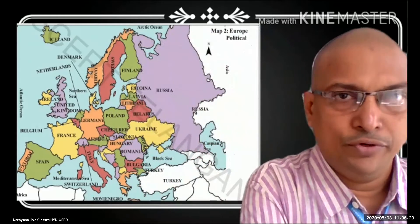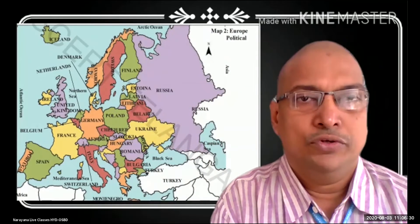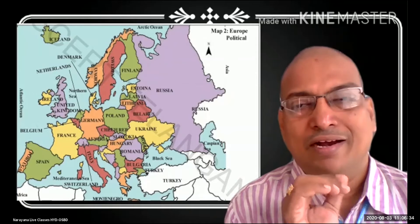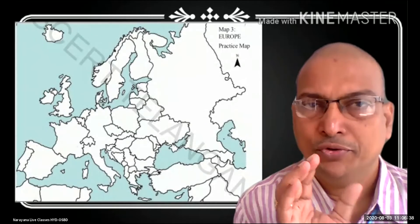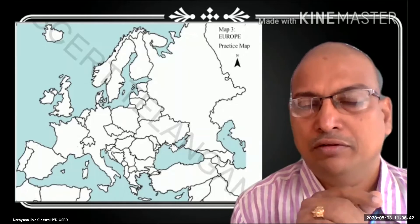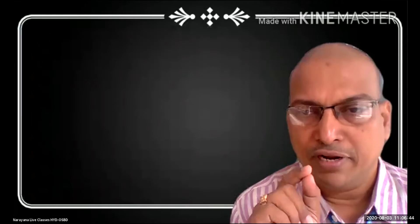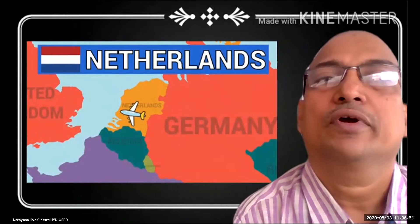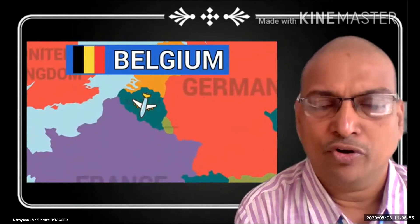The Europe political map is already in your textbook, showing important countries and important places. This is the outline map — observe this also. Now each and every country: you have to remember where the flight is moving and remember that country name.